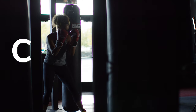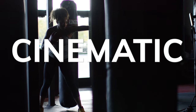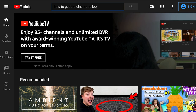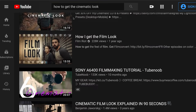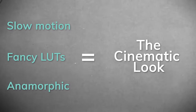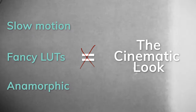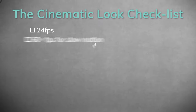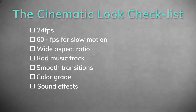The truth is the word 'cinematic' has become kind of a buzzword — a simple search on YouTube will get you a million different ways to achieve this coveted look. But just because you use slow motion, fancy LUTs, and anamorphic lenses doesn't necessarily mean it's actually cinematic. It just means it has elements of it. Sometimes using every single one of those elements ends up hurting your video rather than helping it.